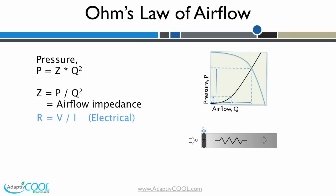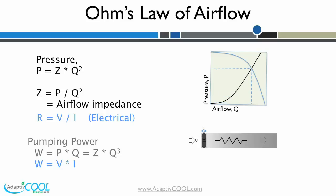It only takes 25 percent of the pressure to drive 50 percent of airflow. This relationship between pressure and airflow is clear from the equation and the plot. Pumping power — the power required by a fan to push air — is the product of airflow and pressure, or P times Q. This is similar to P equals V times I in the electrical domain.